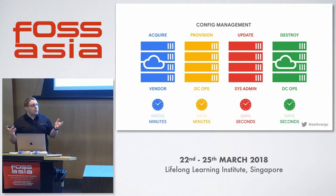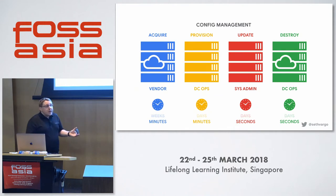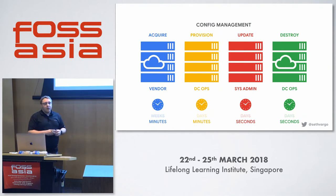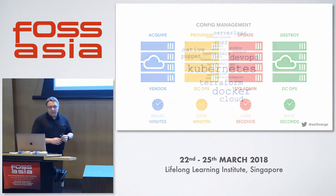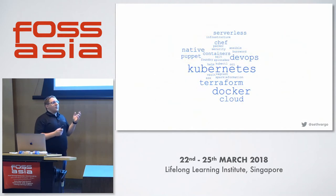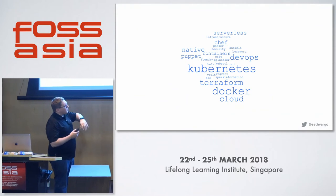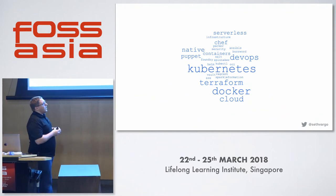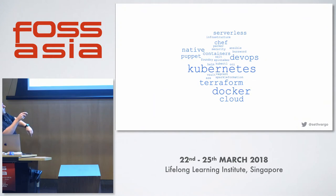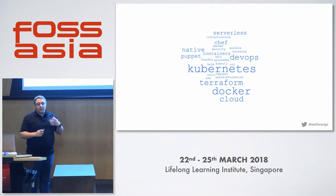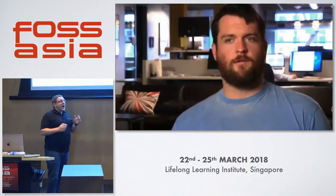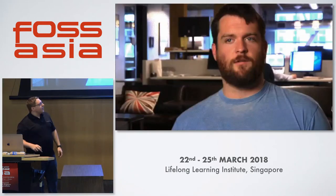Looking at where we've come from — the 80s and 90s to now — we have amazing tools. Cloud providers give us compute at the snap of a finger. We have configuration management tools that let us provision systems. We have tools like Terraform that manage the complexity of linking all of these applications together. We have tools like Kubernetes and Docker that let us containerize applications and schedule them at large scale. So we have to ask ourselves: how did we get here?